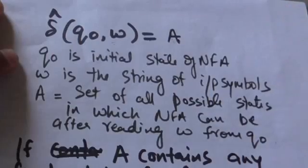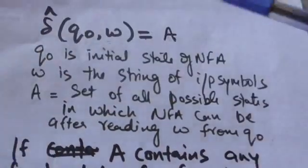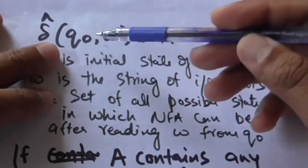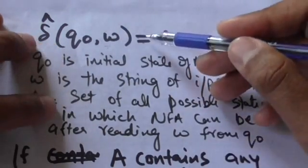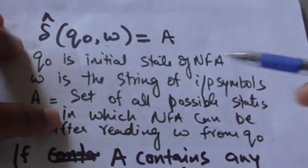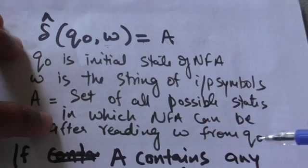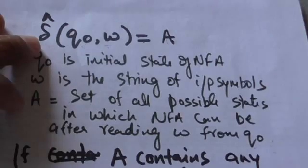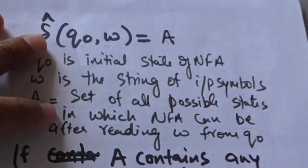Now suppose there is an NFA without empty moves whose initial state is q0. The output of the extended transition function of that NFA for present state q0 and string of input symbols w is a set A. The set A is the set of all possible states in which the NFA can be after reading string w from state q0. If A contains any final state of the NFA, then the string w will be accepted by the NFA.